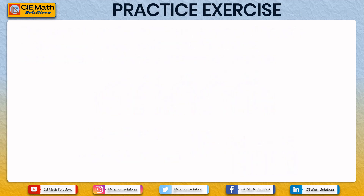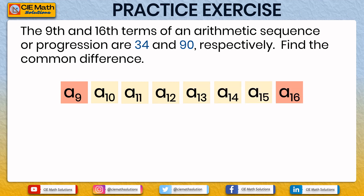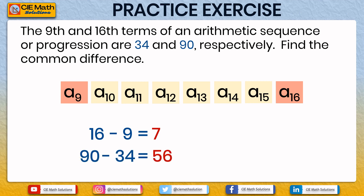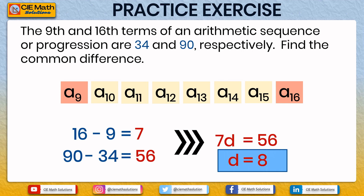Now it's your turn. The 9th term and 16th term of the arithmetic sequence are 34 and 90 respectively. Find the common difference. Please pause the video to try, then press play to check your answer. Subtracting their orders: 16 minus 9 equals 7, so there are 7 d's added. Subtracting the values: 90 minus 34 equals 56. So 7d equals 56, and dividing both sides by 7, d equals 8. The common difference is 8.